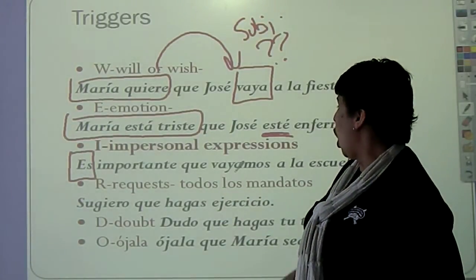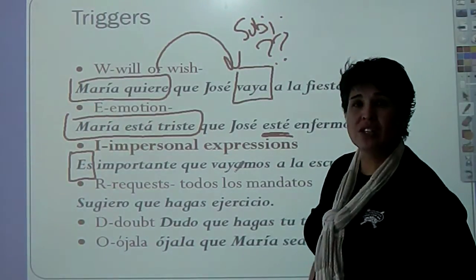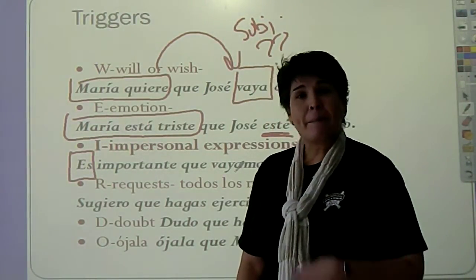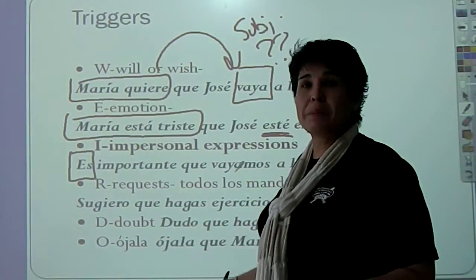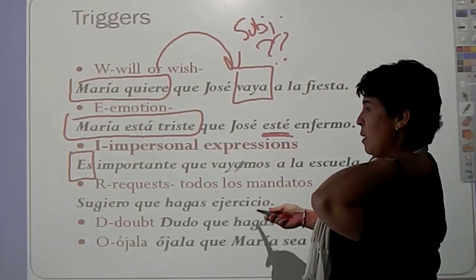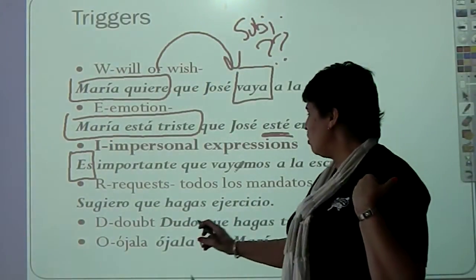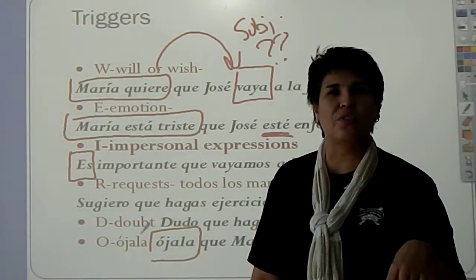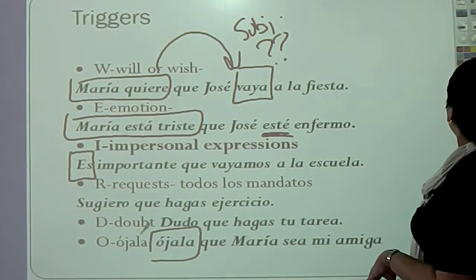Requests. All of my commands. That's why the commands were subjunctive. Because I can ask you, dude, go close the door. But whether or not you close the door, I don't know. It's really up to you. That's why commands are English subjunctive. Doubt. Obviously, right? And then you've got this little trigger right here, which is ojala, which is just a generic word for saying, I hope, we hope, they hope.